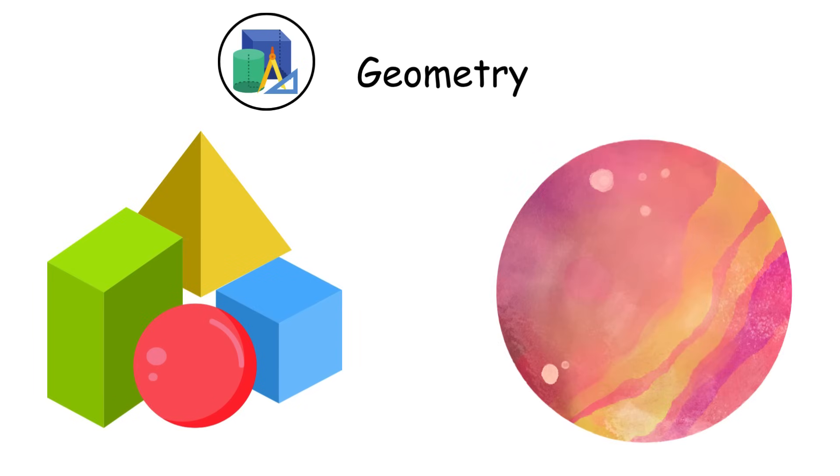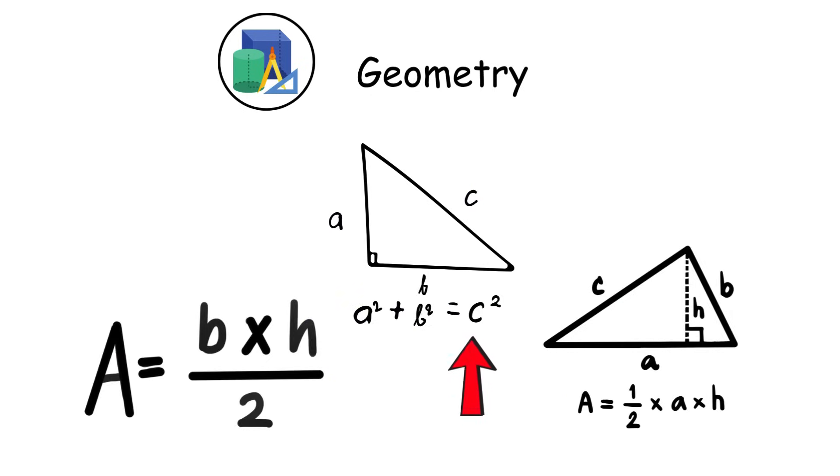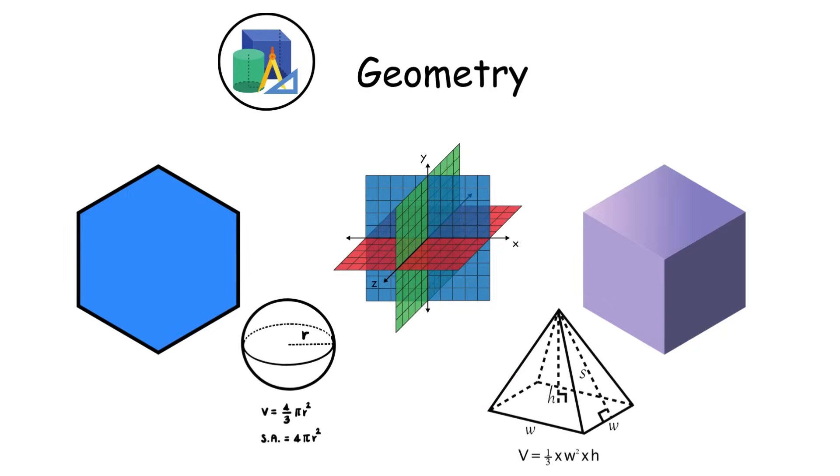Geometry. Geometry studies the properties of shapes and spaces, starting with basic figures like triangles, circles, and rectangles. It uses tools like the Pythagorean theorem to calculate distances and areas, such as finding a triangle's hypotenuse. Advancing to Euclidean geometry, it examines 2D and 3D objects, calculating volumes and surface areas.